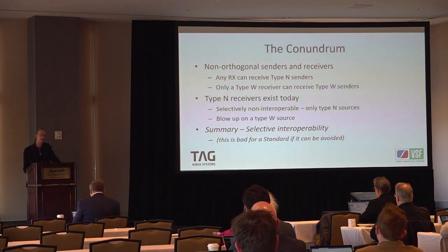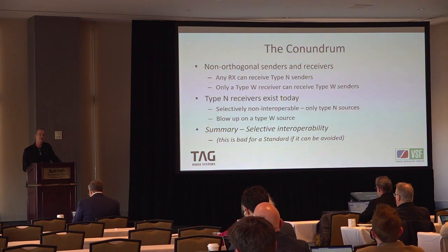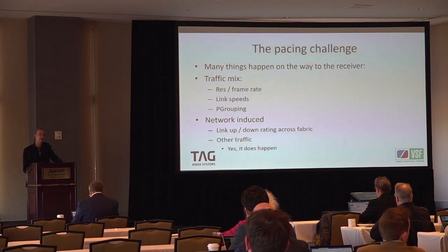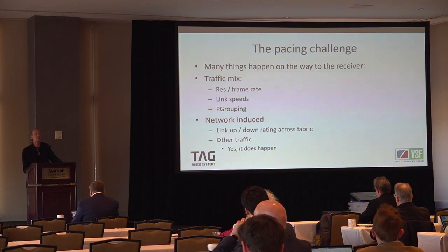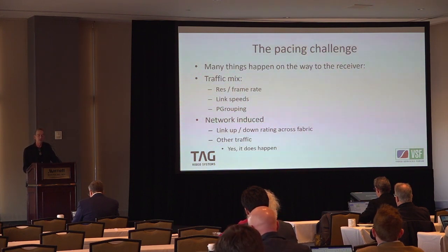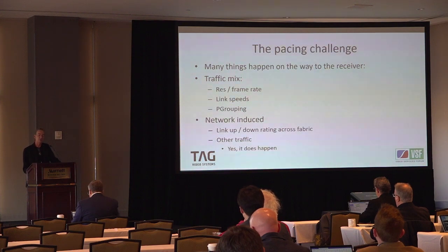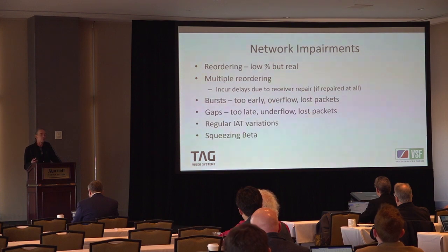Narrow receivers exist today but only work with narrow sources — a wide source will blow up the receiver. We have selective interoperability in this standard. Many things happen on the way to the receiver that we may not have considered sufficiently when writing the standard: mix of resolutions and frame rates, link speeds up and down through multiple cores, how P groups are built — very small P groups generate far more packets than a full P group — and of course other traffic. It's amazing to go poking on a 2110 network and find other traffic — sometimes by design, sometimes inadvertently.